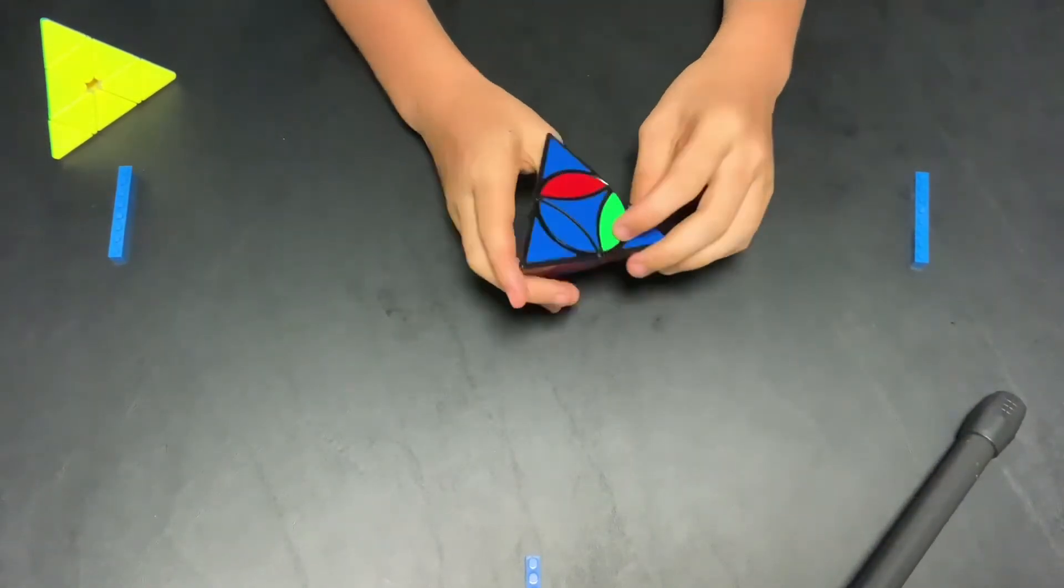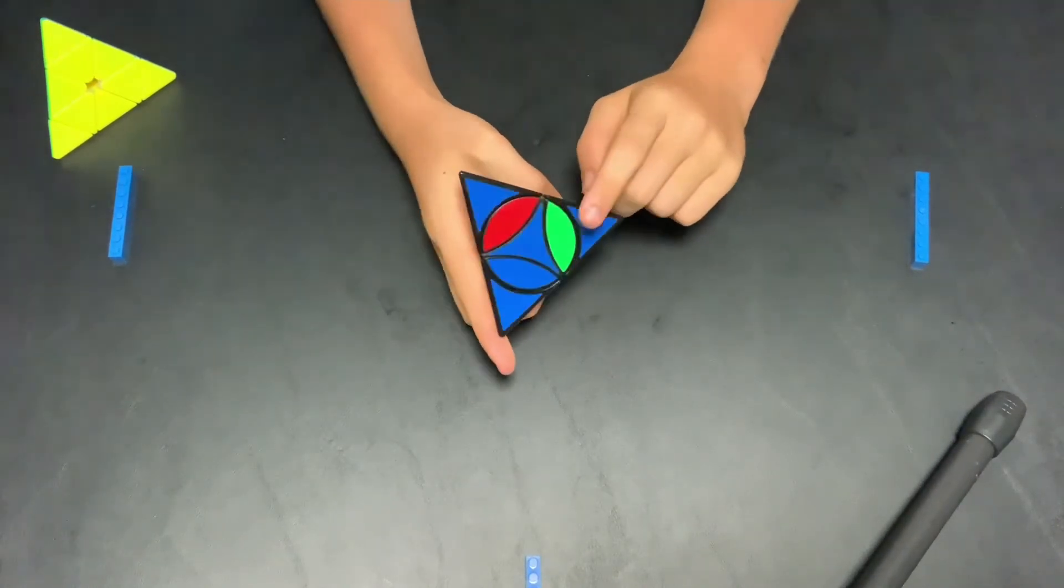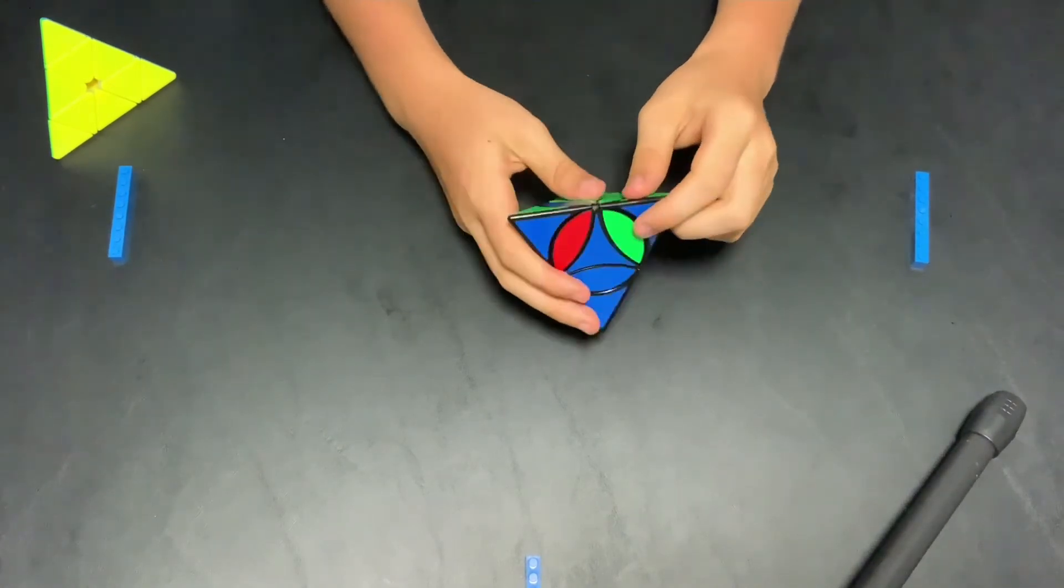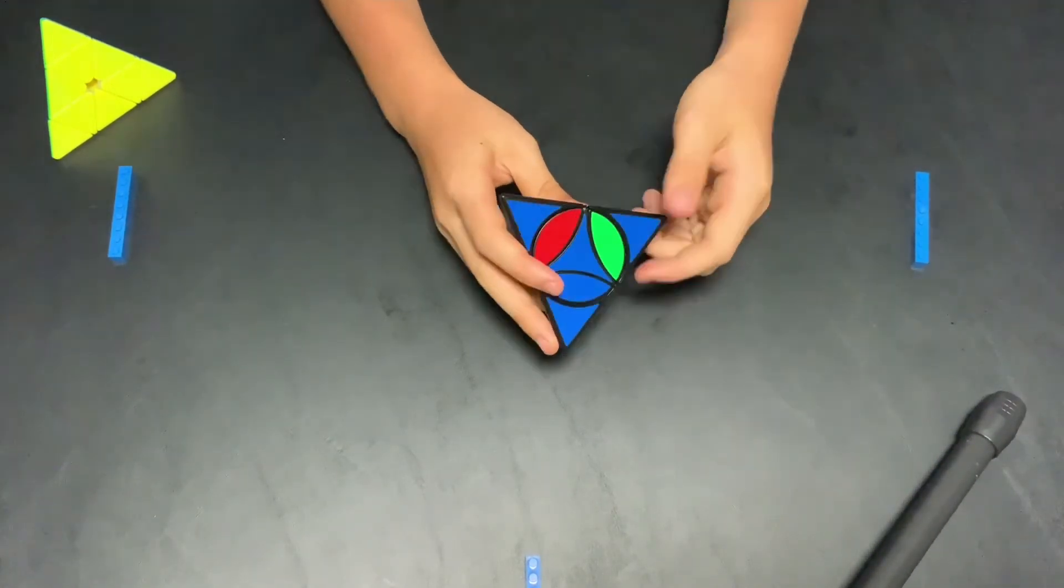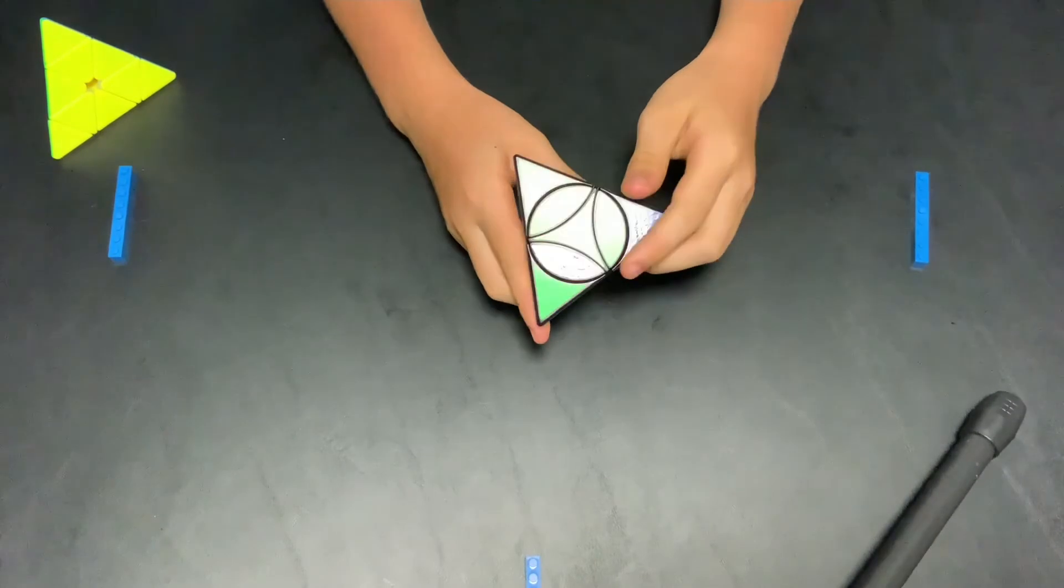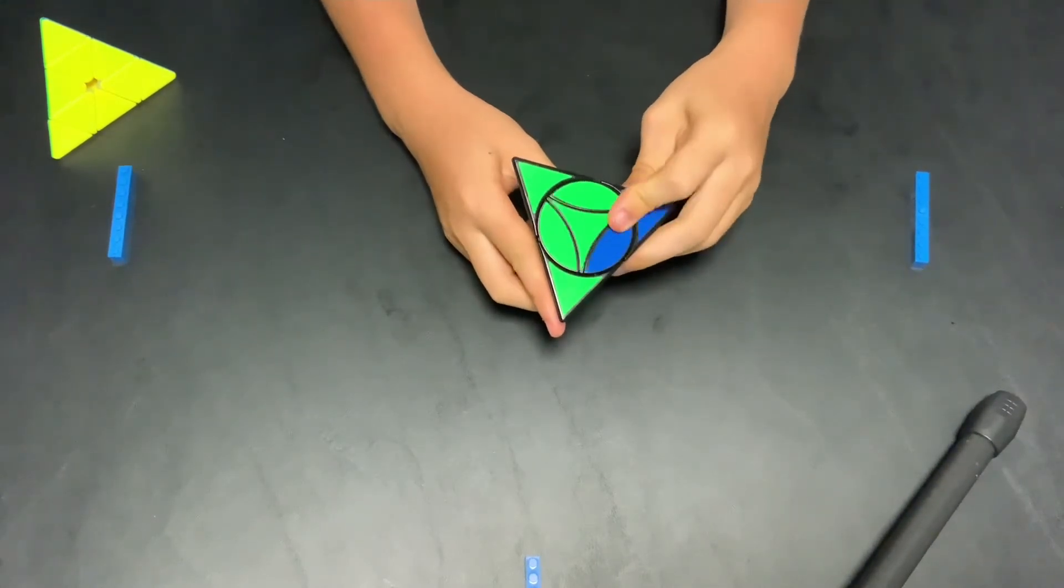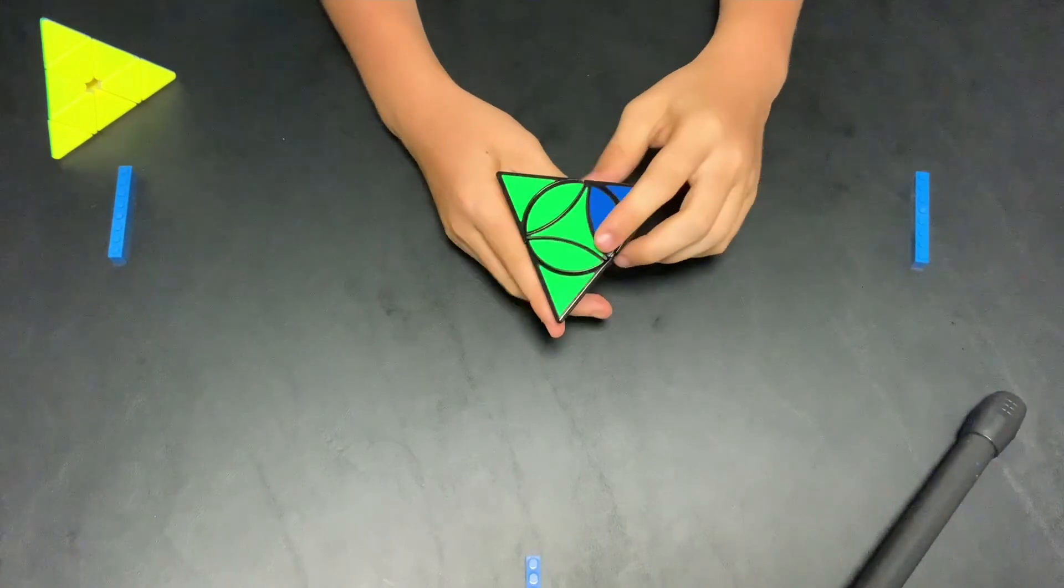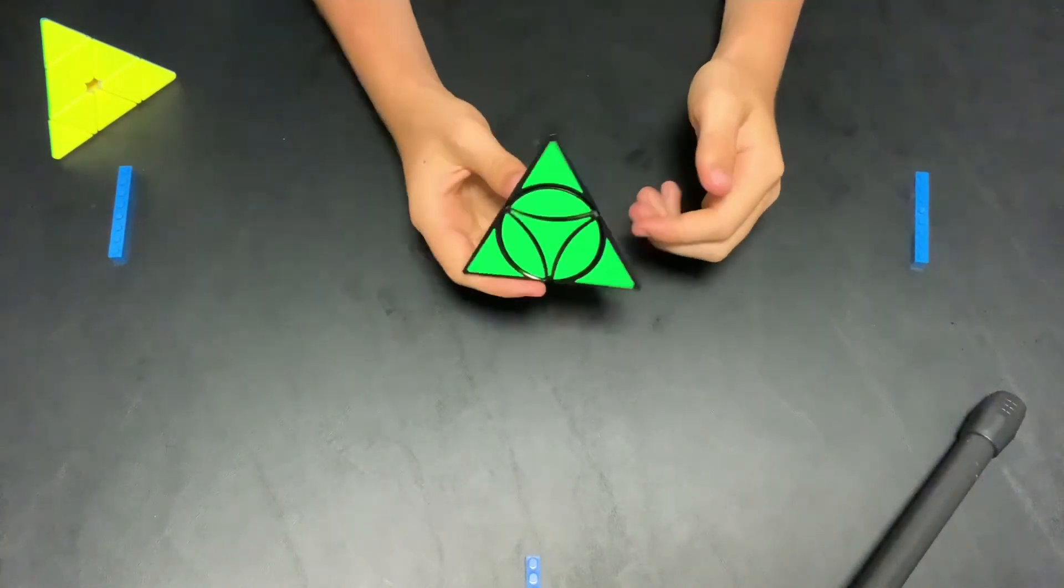All right now we have one left and if you remember like last time we have to twist this edge to the occupied spot and then move it around. So we're going to twist it to the occupied spot and then orient our non-green edge and then twist it back. So now we have the green and yellow side and we're very close to getting the blue and the red sides as well.